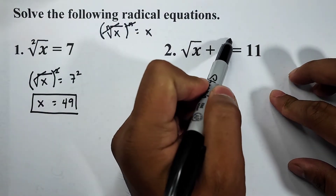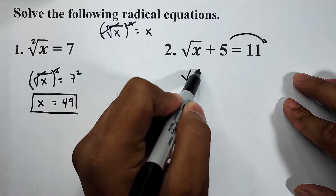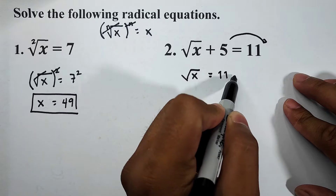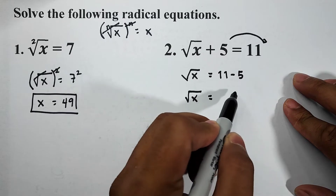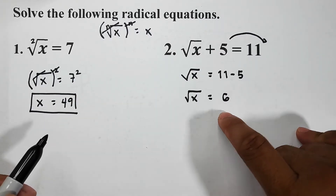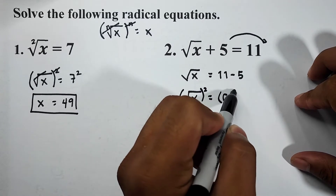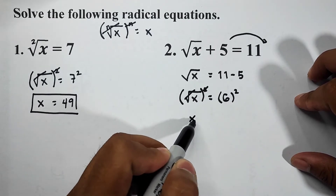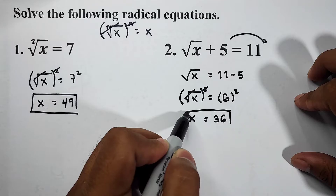What we need to do is figure out how to isolate the radical. By transposition, we can transpose five to the other side, so it will become: square root of x is equal to 11 — from positive it will become negative five. Simplifying, we have square root of x is equal to six. Same process: we square both sides of the equation, square root of x raised to two cancels, and we have x is equal to 36.